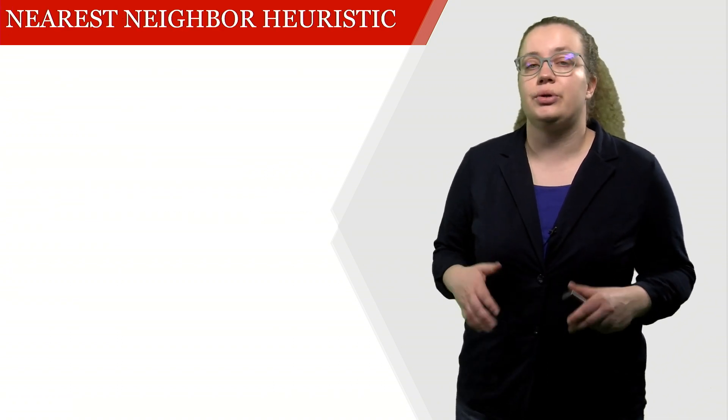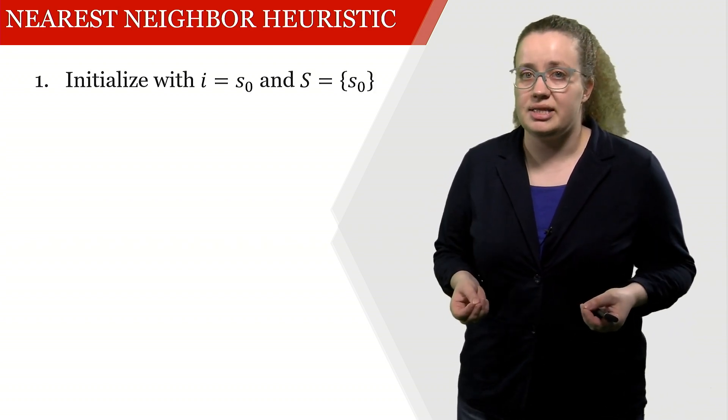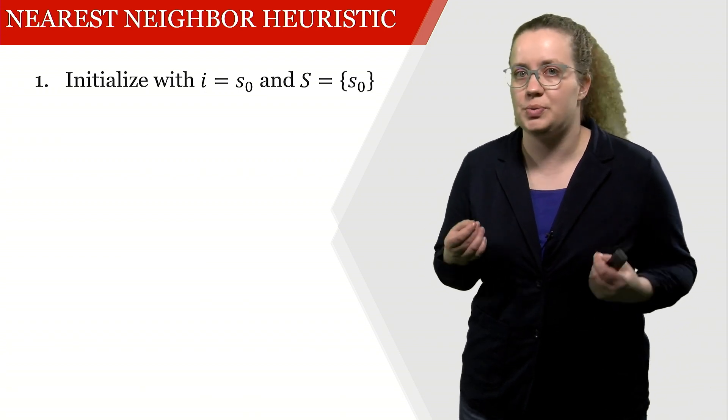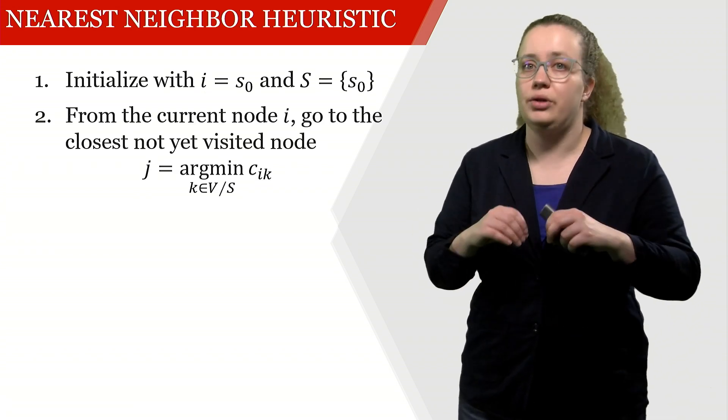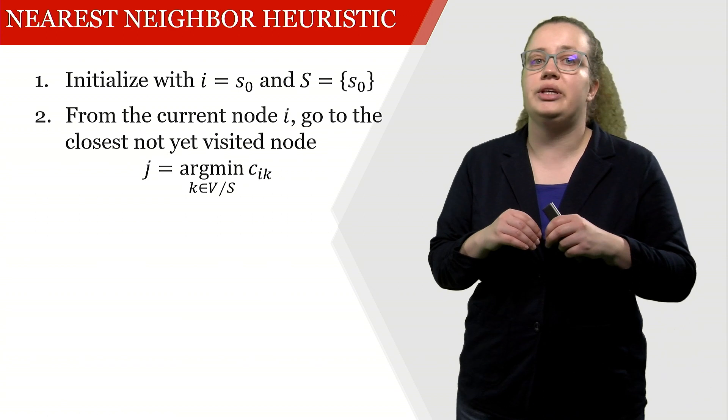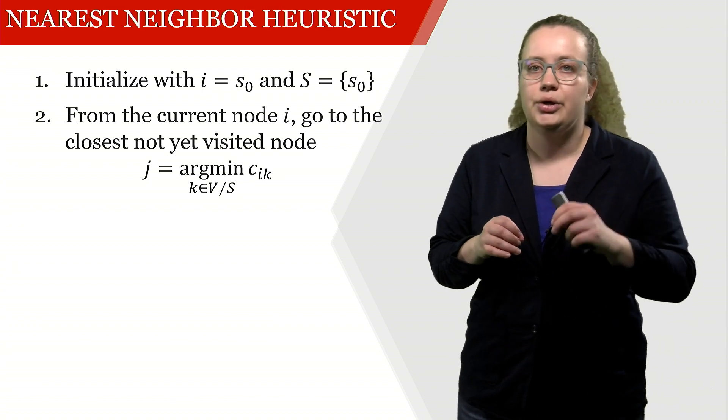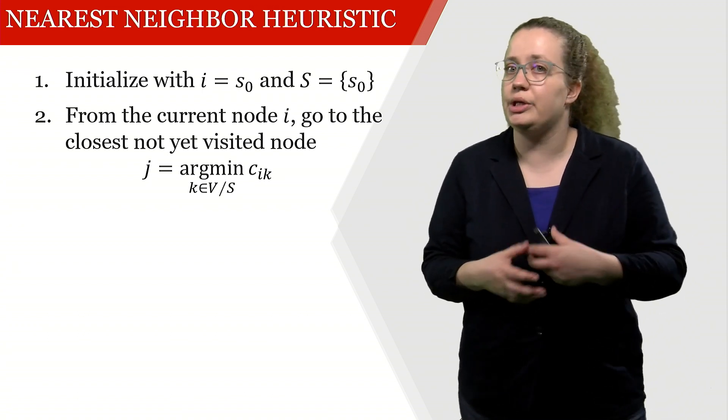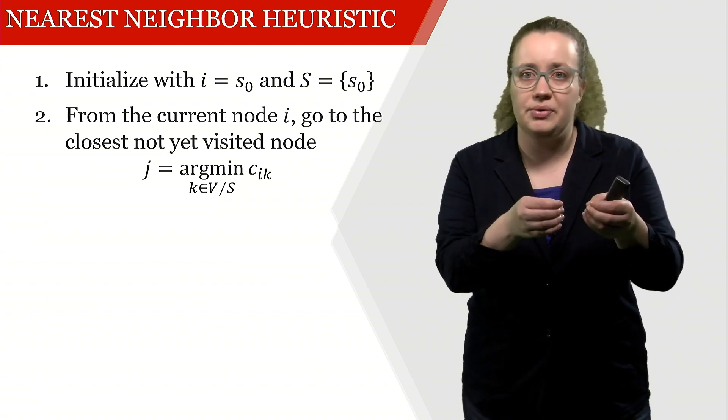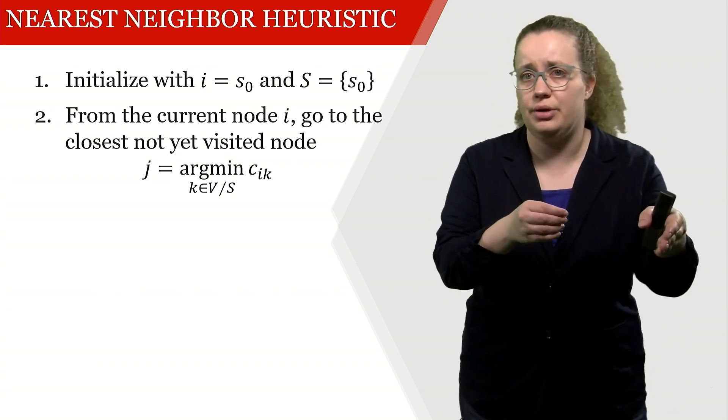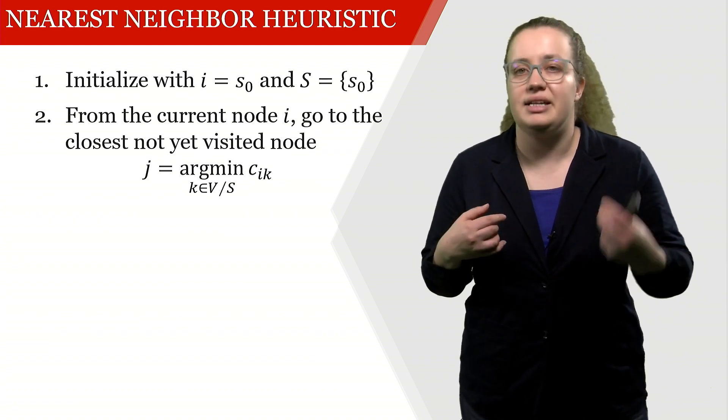Today we're going to look into the so-called nearest neighbor heuristic. In this, we're initializing some set S with a starting node which we refer to as s₀. Then from the current node i, we're looking for the closest node that is not yet visited—in the set V minus S. If I'm at the first node, I'm just going to the closest node that is anywhere available. But if I already visited some nodes, then I'm just looking for those nodes that I have not visited yet, and I'm looking for the cost minimal or time minimal next node.